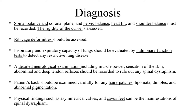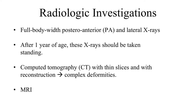Diagnosis starts with thorough physical examination and history taking, including the perinatal period. Examination should focus on the sagittal and coronal balance of the patient; you should note any pelvic or head tilt and look at shoulder balance. You should also assess the rib cage. Neurological examination should include muscle power, sensations, and tests for abnormal reflexes. The patient's back should be inspected for abnormal hairy patches, pigmentations, asymmetrical calves, or cavus feet — which are manifestations of spinal dysraphism.